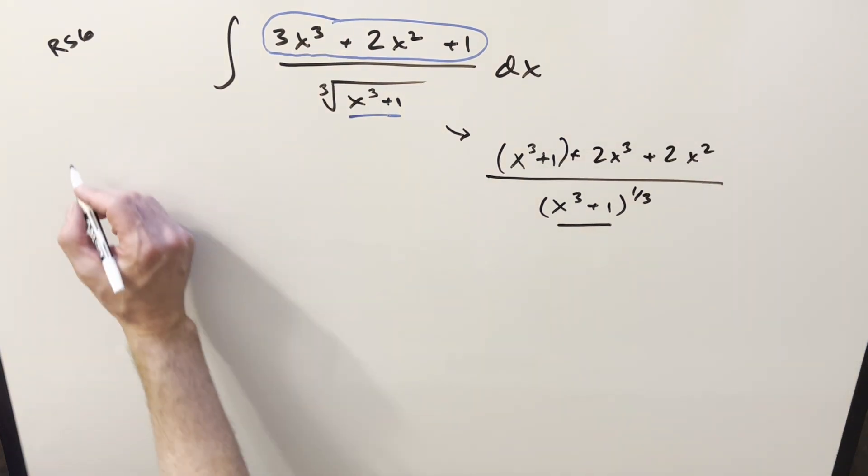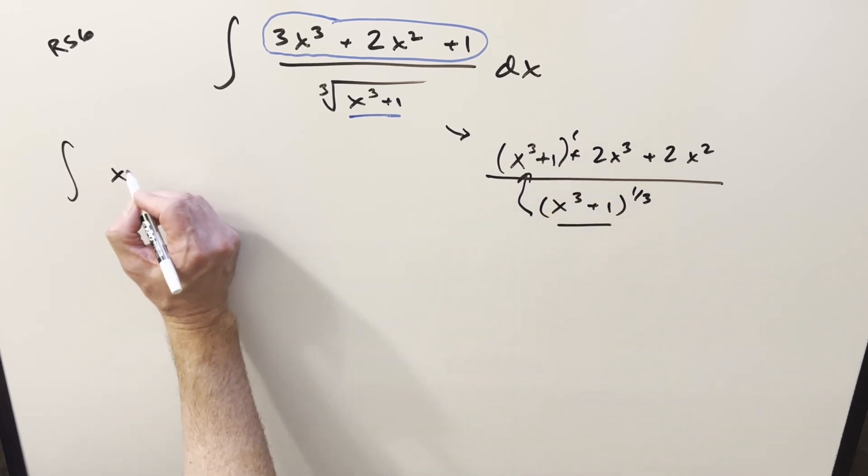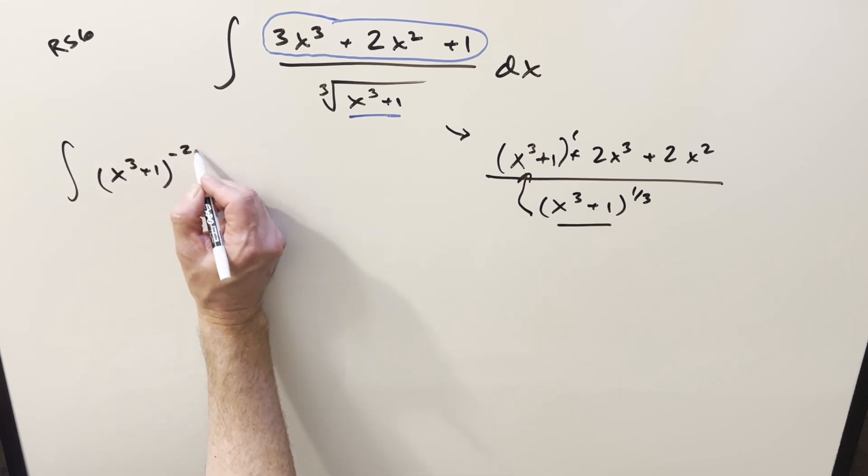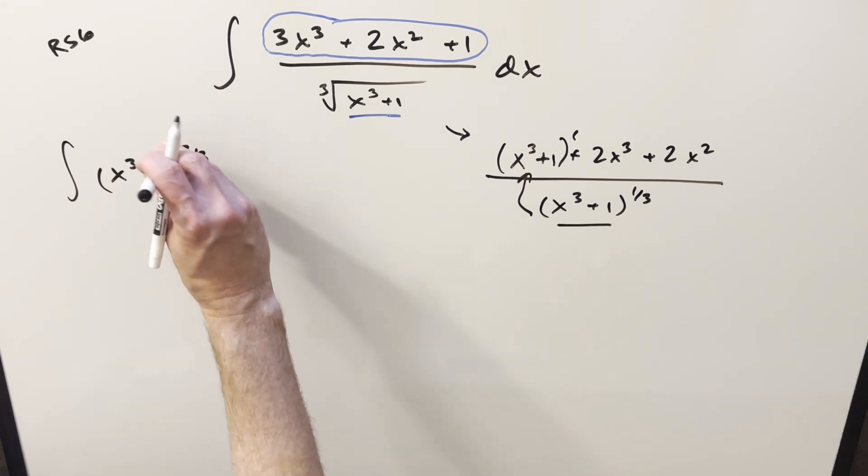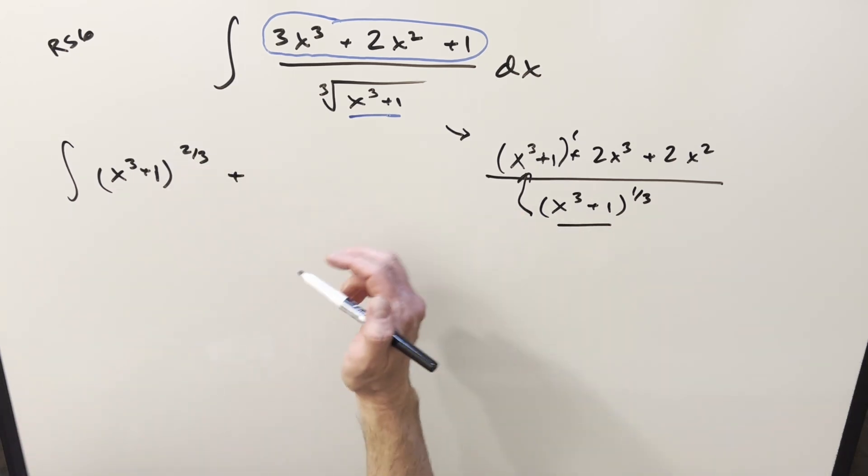So if I take this and put it back into the integral, first I'll divide this into this piece with exponent properties. That's going to become x cubed plus 1, and then it'll be minus 2/3, I think. No, actually that's a positive 2/3 when we do that, when we divide that in. And then we'll break it into two fractions.